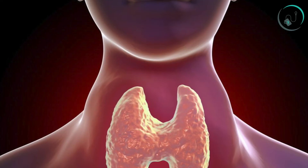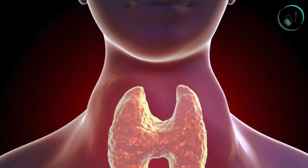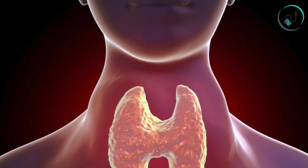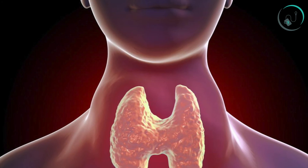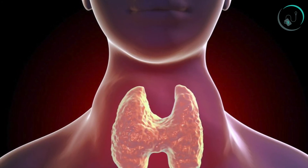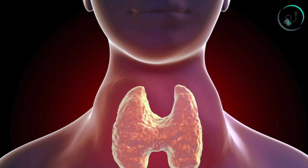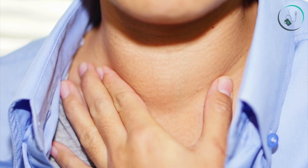The thyroid gland is an essential endocrine gland. It plays an important role in the metabolism, growth, and development of the human body, and helps to maintain several body functions. It constantly releases a balanced quantity of hormones into the bloodstream. Approximately 1 out of 10 Indian adults suffers from hypothyroidism. People suffering from hypothyroidism should follow a low iodine diet.